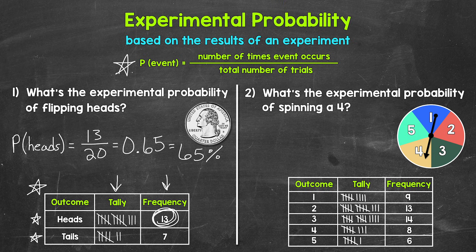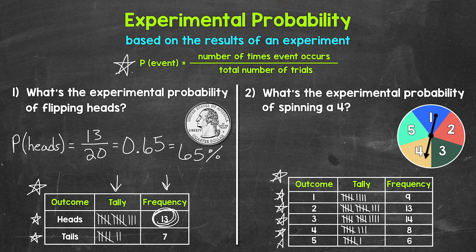Let's move on to number two, where we have what's the experimental probability of spinning a four. So here are the results of the experiment. The spinner was spun 50 times. So we had 50 trials. So we have all of the possible outcomes here: spinning a one, two, three, four, or five. And all of these outcomes were equally likely to occur. Then we have our tally column and frequency column.